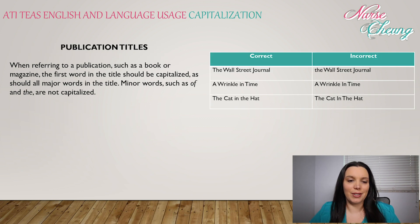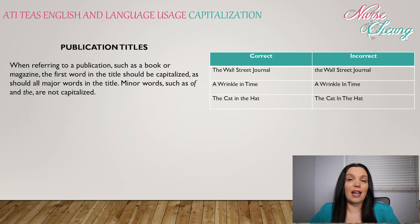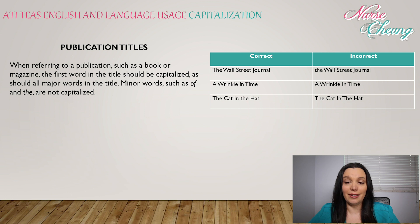Starting with publication titles: when referring to a publication such as a book or magazine, the first word of the title must be capitalized, as should all major words in the title. Minor words such as 'as', 'of', and 'the' are not capitalized. For example, 'The Wall Street Journal' should have every word capitalized because the full name is The Wall Street Journal. 'A Wrinkle in Time' should be capitalized except for the word 'in', and 'The Cat in the Hat' should be capitalized except for the words 'in' and 'the'.